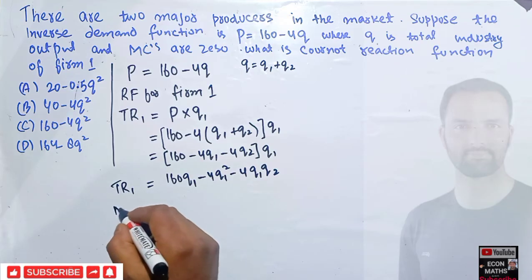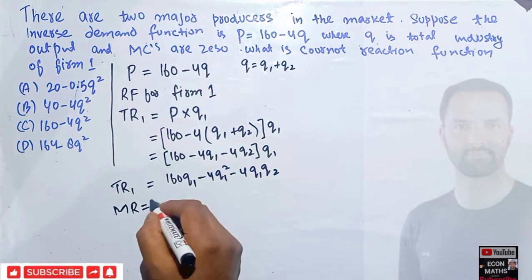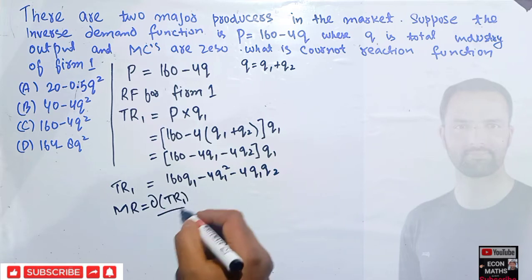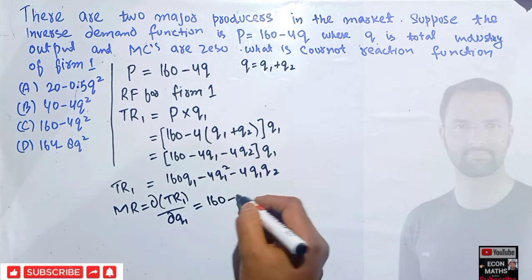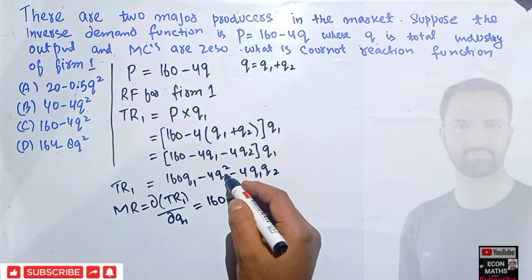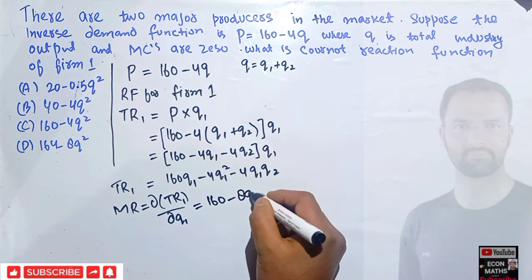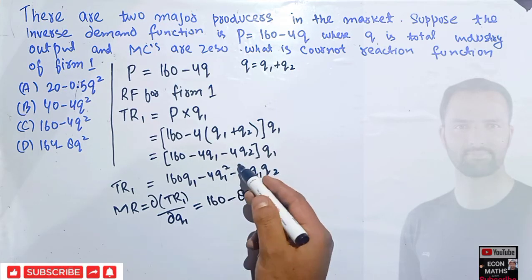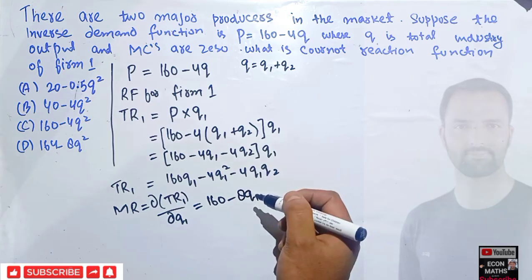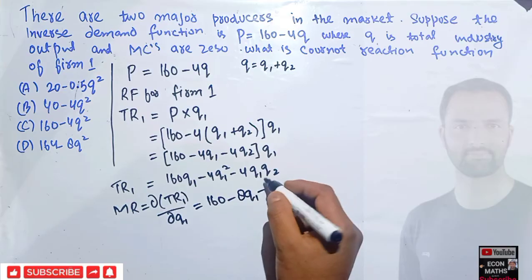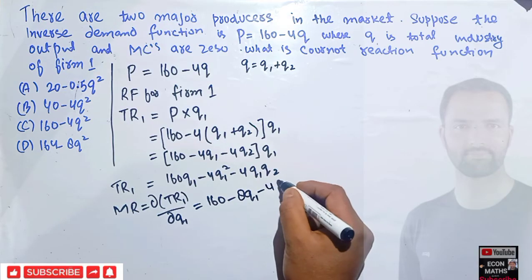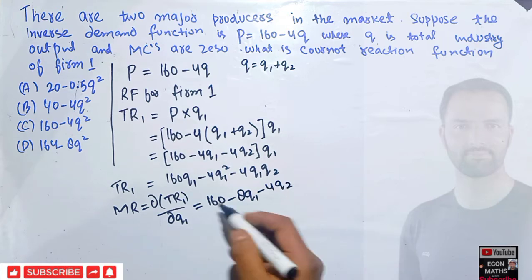Marginal revenue is simply the derivative of the total revenue function with respect to q1. The derivative of 160q1 is 160; derivative of 4q1² is 8q1; and derivative of 4q1q2 with respect to q1 is 4q2. So MR = 160 − 8q1 − 4q2.